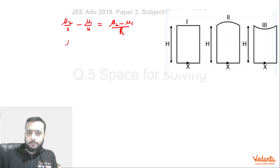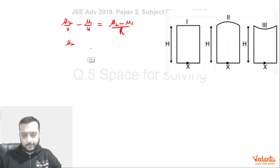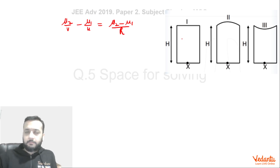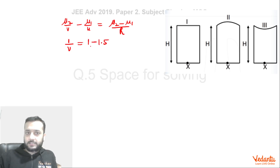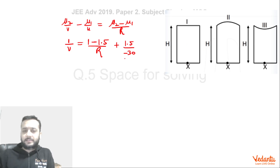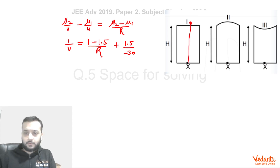Here, μ₂ is 1 because the ray is going into air after refraction. μ₁ is the medium from which light comes, so μ₁ = 1.5 for all three cases. The object point X is at u = −30 cm — the minus sign is because the incident ray is going upward and point X lies in the opposite direction with respect to the refracting surface.